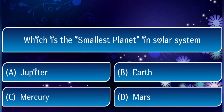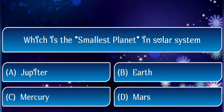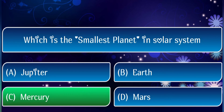Next question: which is the smallest planet in the solar system? The answer is Mercury.